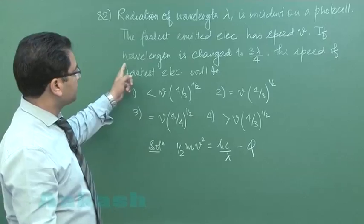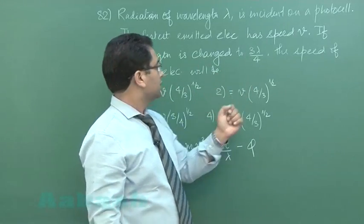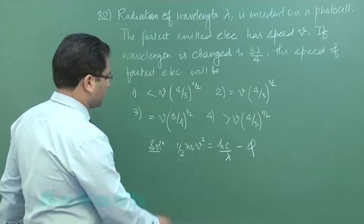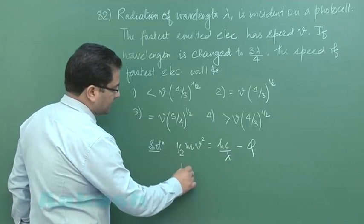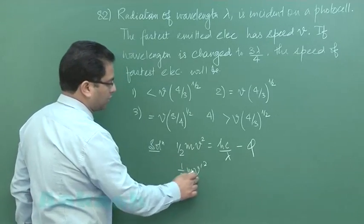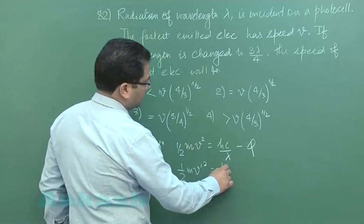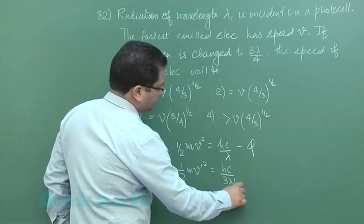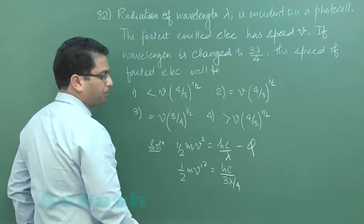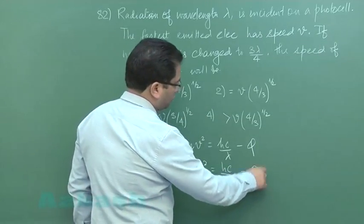Now the question says if the wavelength is changed to 3 lambda by 4 the speed of fastest electron will be. So in the second case the fastest electron speed call it as v dash would be hc by the wavelength now is 3 lambda by 4 minus the work function.